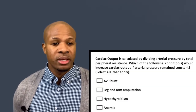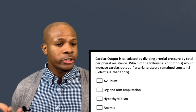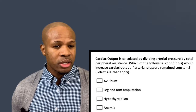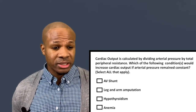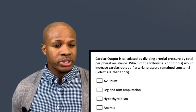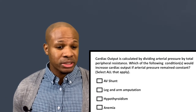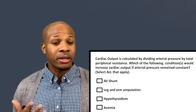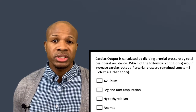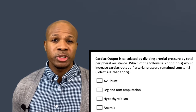Question number one says cardiac output is calculated by dividing arterial pressure by total peripheral resistance. Which of the following conditions would increase cardiac output if arterial pressure remained constant? Select all that apply. This question is telling us that cardiac output equals pressure divided by resistance.